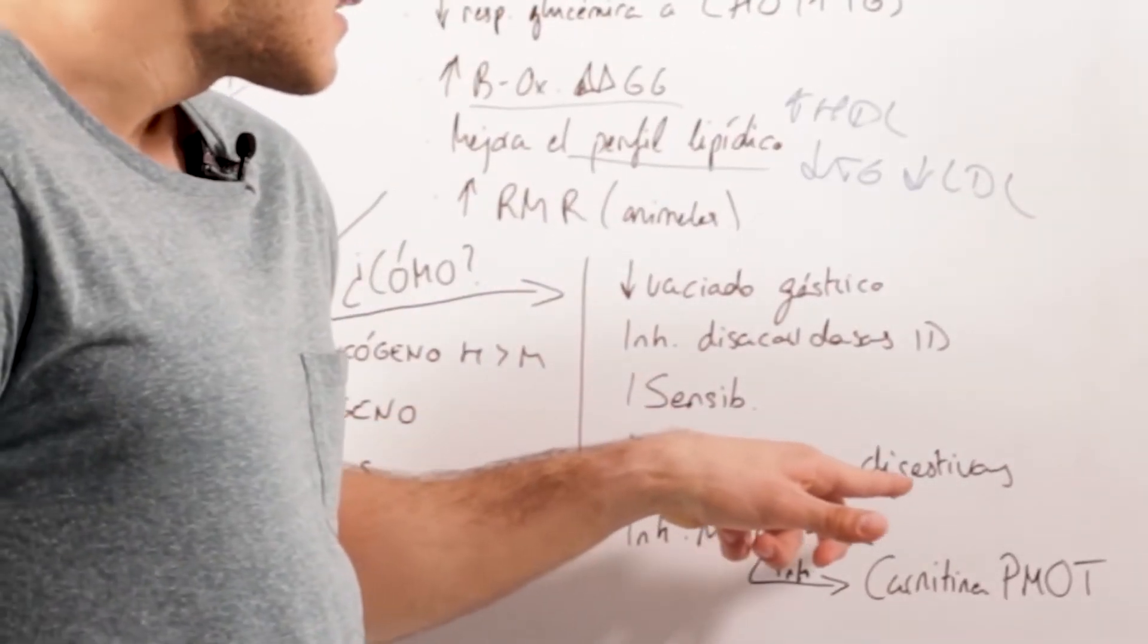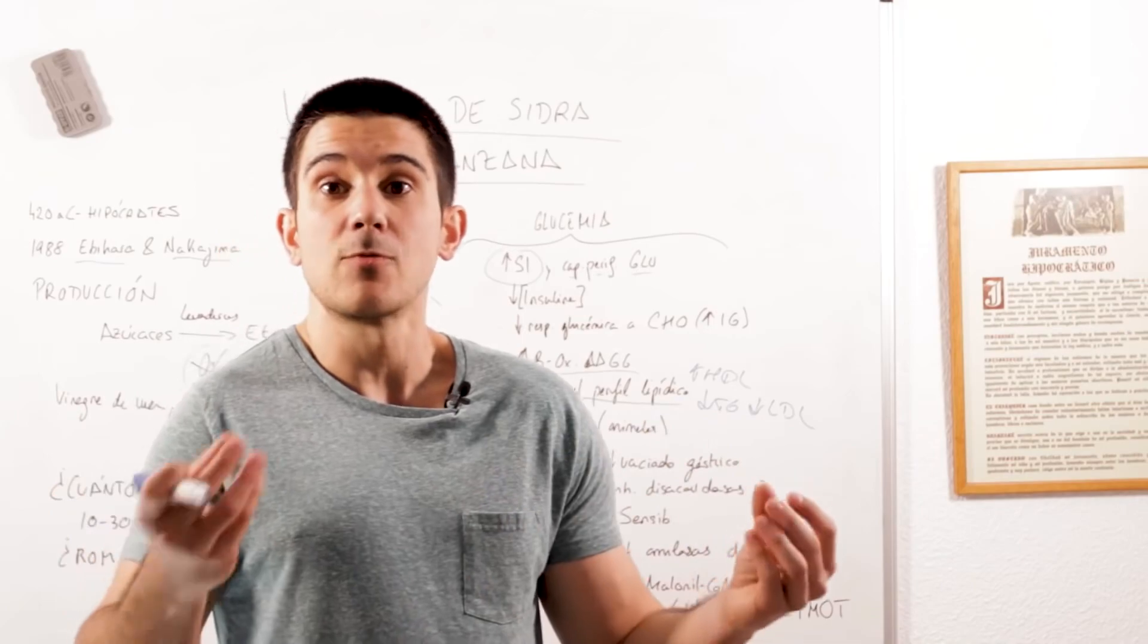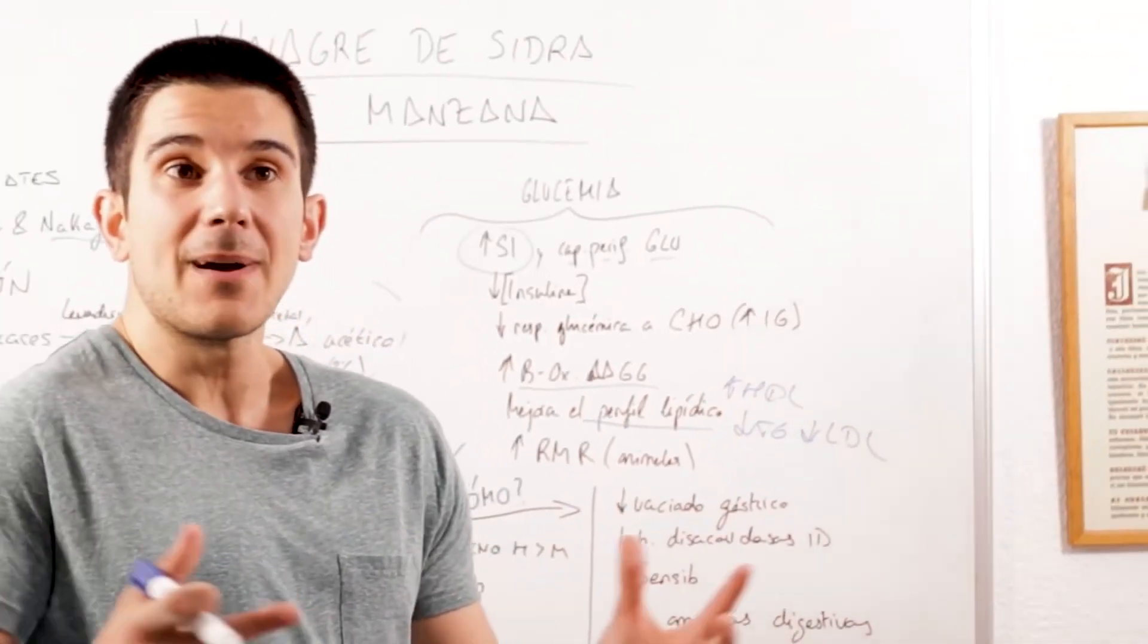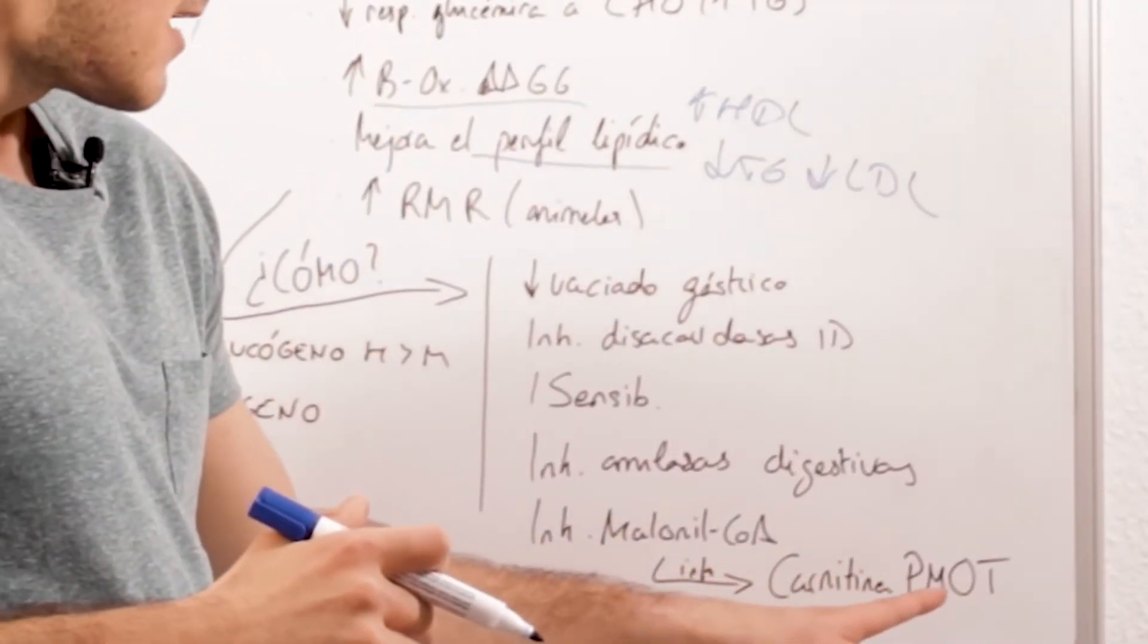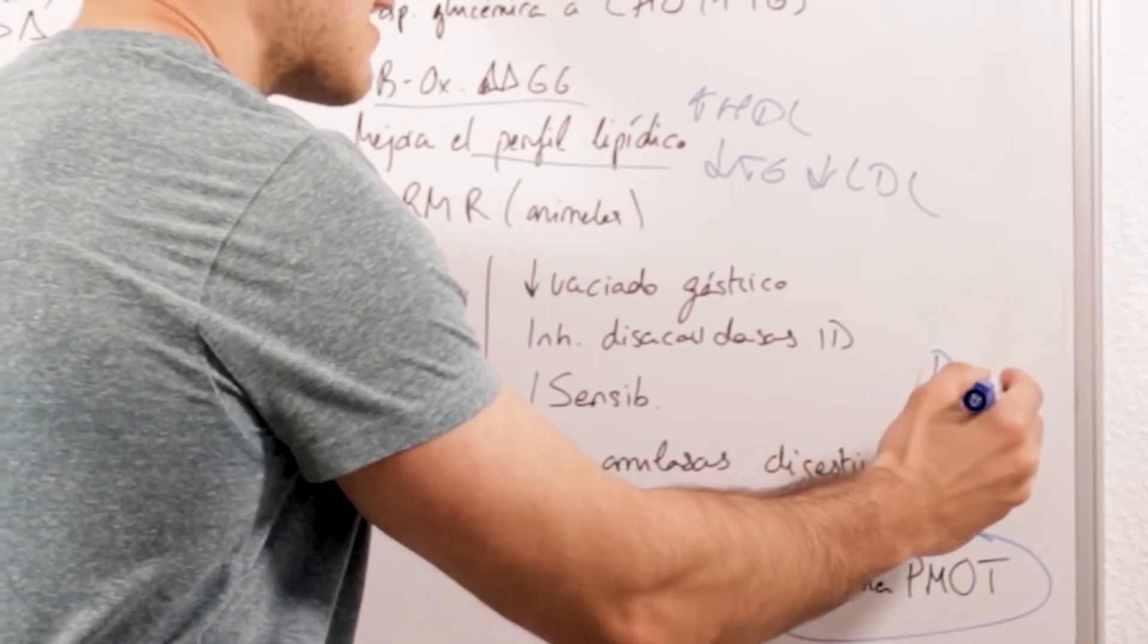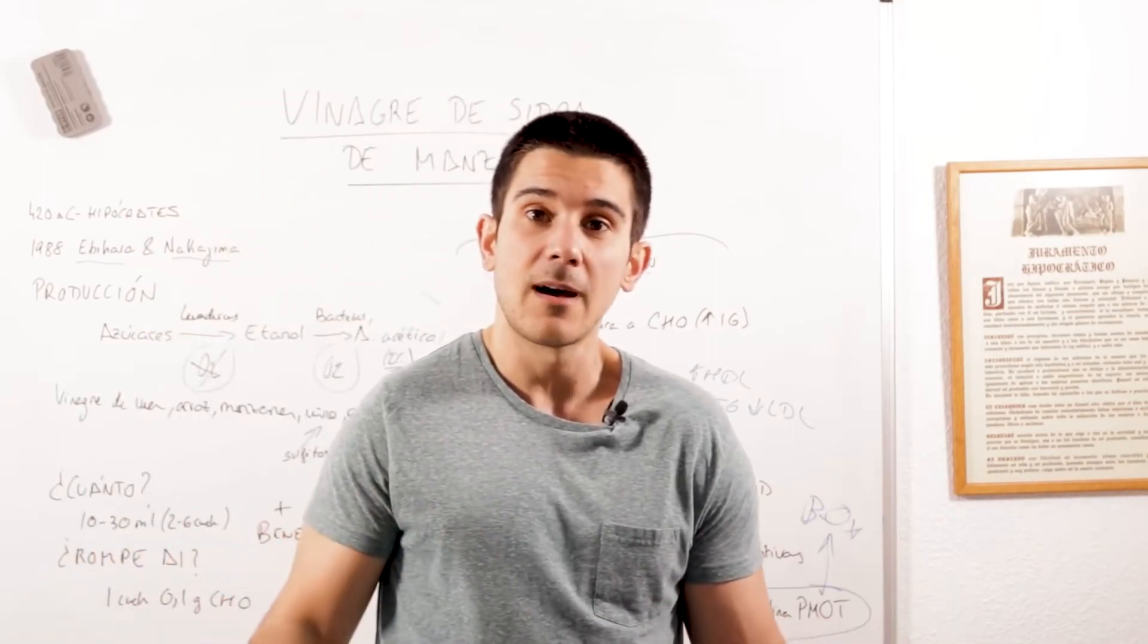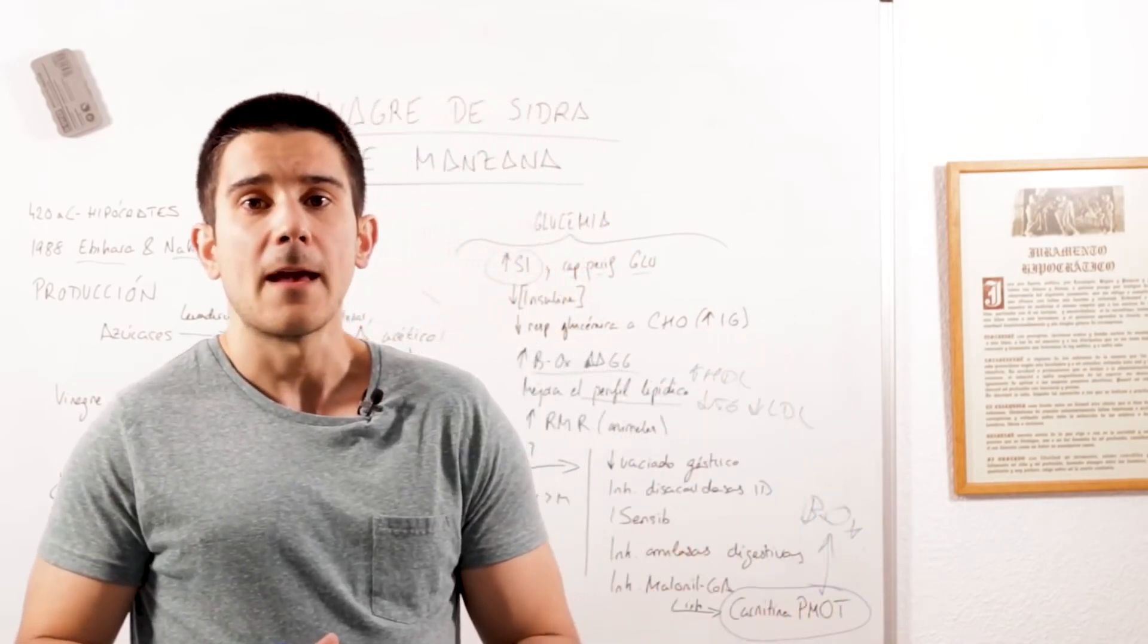It also inhibits, take note, digestive amylases, especially salivary amylase, an enzyme we have in our saliva that begins to digest carbohydrates as soon as we start chewing. Carbohydrate digestion starts with the first bite. And this is very interesting. This is very, very interesting. It blocks the malonyl coenzyme A enzyme. And what happens when this enzyme is inhibited? Well, you see, the malonyl coenzyme A enzyme, in turn, inhibits carnitine palmitoyl transferase. And this enzyme, carnitine palmitoyl transferase, is essential in the beta oxidation of fatty acids. It's essential in such a way that if we inhibit the enzyme that inhibits this enzyme, this enzyme will be more liberated. It will be more active. Its activity will increase. And this is the way in which vinegar increases the oxidation of fatty acids. It also improves the lipid profile for this reason.